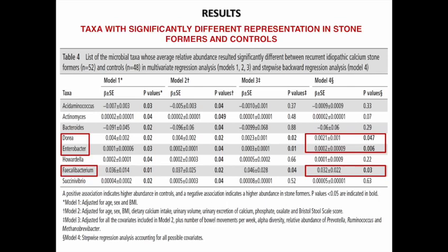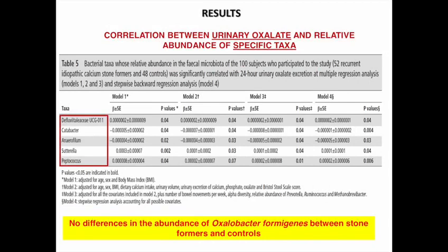Several bacterial species had a lower average representation in the fecal samples of stone formers. For three of them — Dorea, Enterobacter, and Faecalibacterium — the lower representation was confirmed as statistically significant in a stepwise backward regression analysis model. The abundance of several taxa was significantly correlated with urinary oxalate excretion, and this correlation was confirmed as statistically significant in multivariate models for five of them.